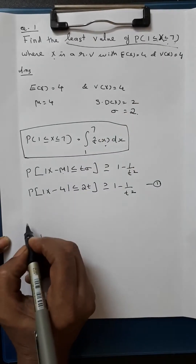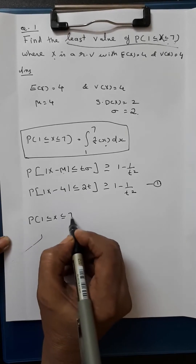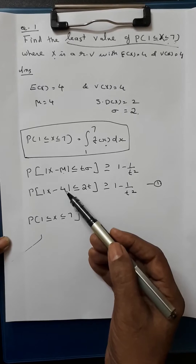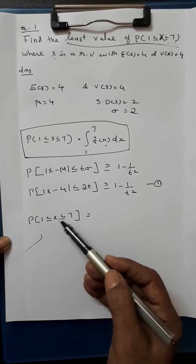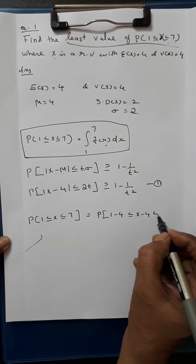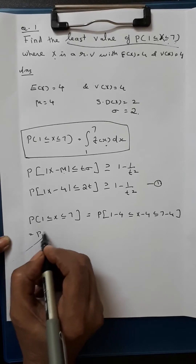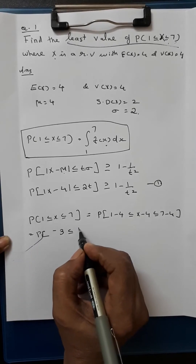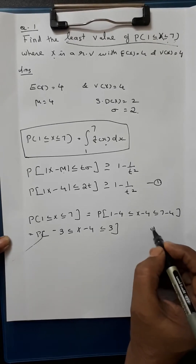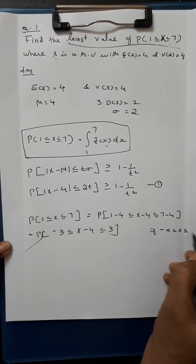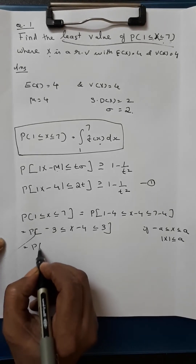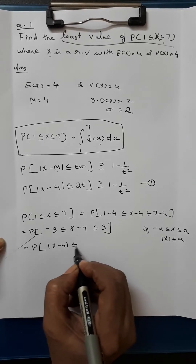We need the least value of P(1 ≤ x ≤ 7). What we are going to do is rewrite x in the form of x − 4 by subtracting 4 from all three values. So this becomes P(1 − 4 ≤ x − 4 ≤ 7 − 4) = P(−3 ≤ x − 4 ≤ 3). We know that if −a ≤ x ≤ a, then |x| ≤ a.